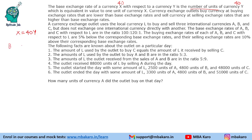Currency exchange outlets buy currency at buying exchange rates that are lower than the base exchange rate, and sell at selling exchange rates that are higher. To make profit — because it's a business — they buy at a lower price and sell at a higher price. For example, if base price is 40, they might buy at 38 and sell at 45.